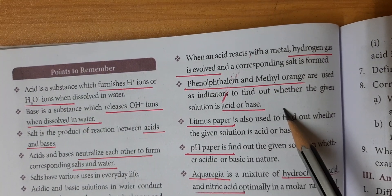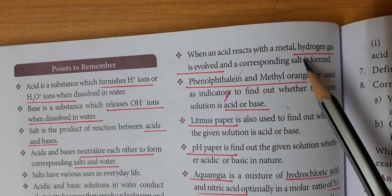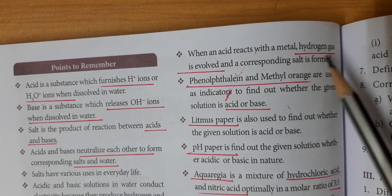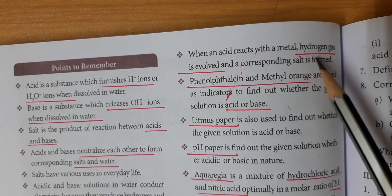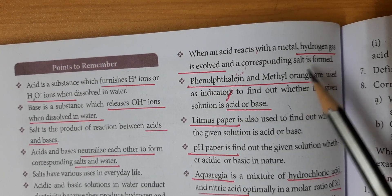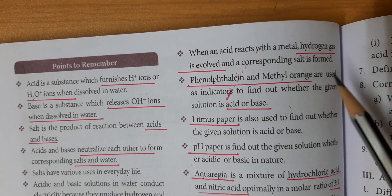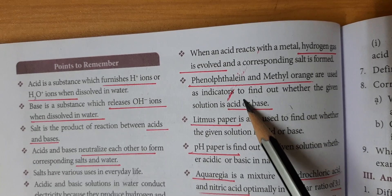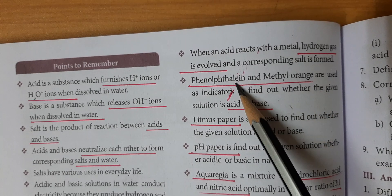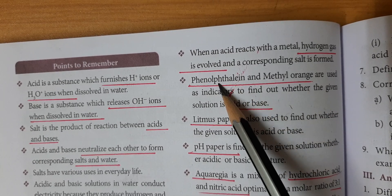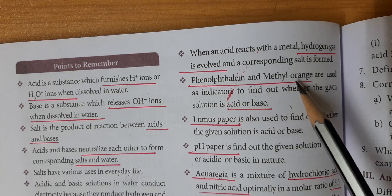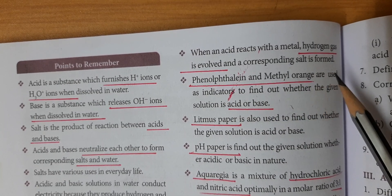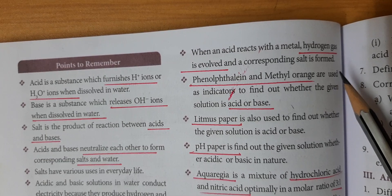When acid reacts with a metal, the corresponding metallic salt is formed along with the evolution of hydrogen gas. Phenolphthalein and methyl orange are indicators used to find out whether a substance is acid or base. Phenolphthalein gives pink color in base and colorless in acid; methyl orange gives pink color in base and golden yellow color in acid.